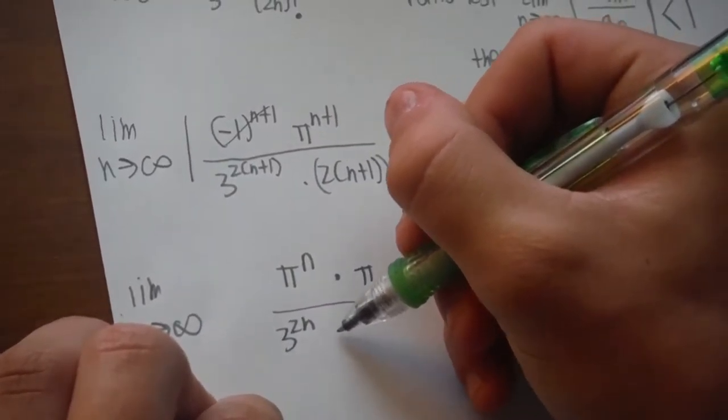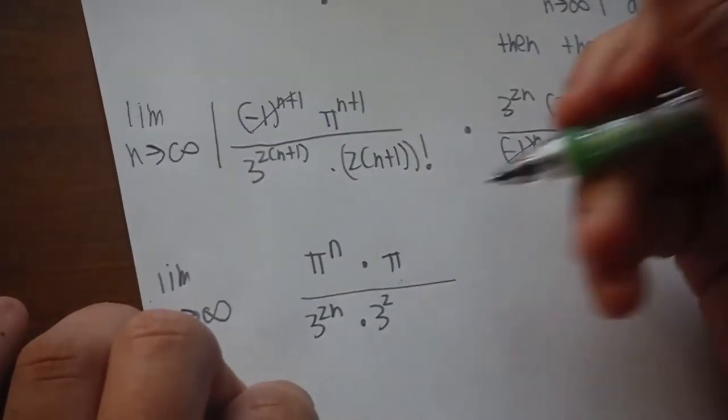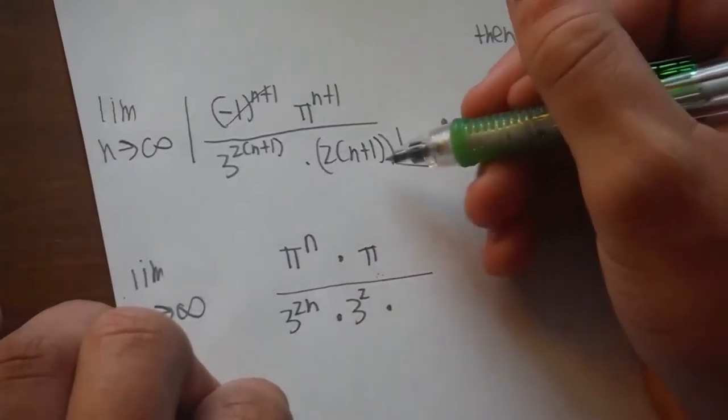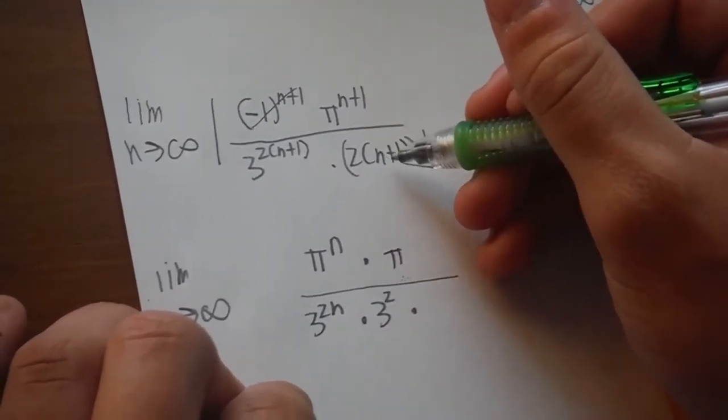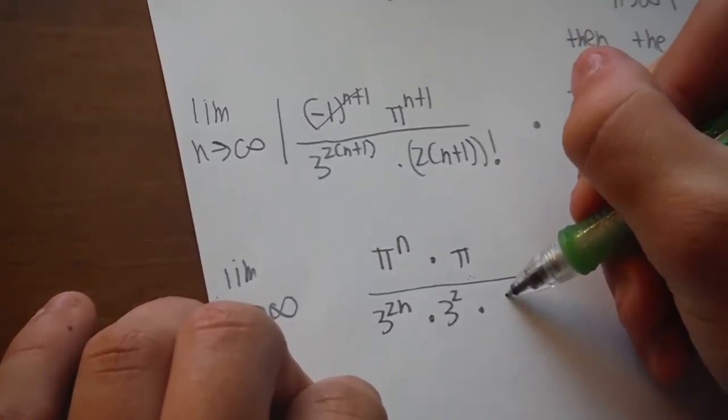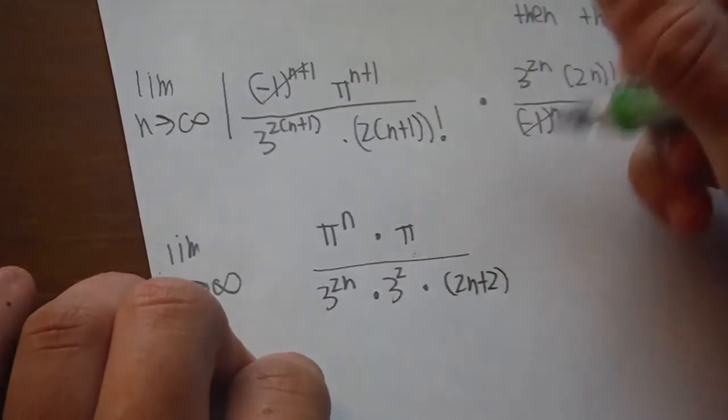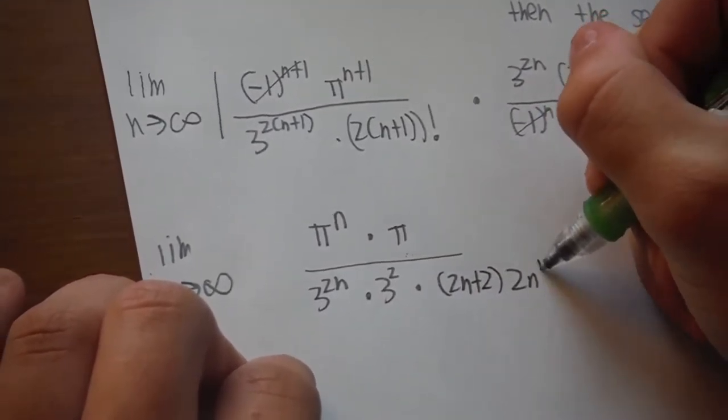And if you distribute the power, it would be pi to the n times pi over, same thing here, 3 to the 2n times 3 squared, times, distributing this, would be 2n plus 2.